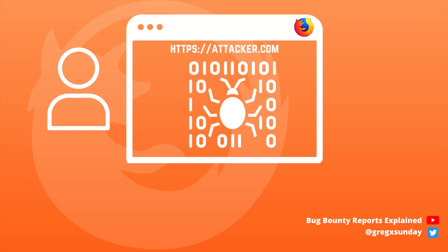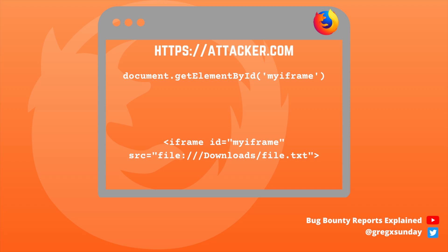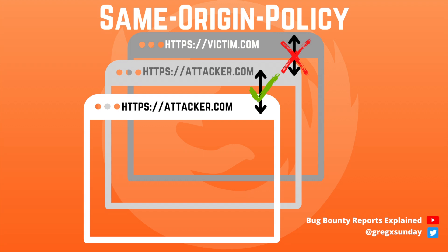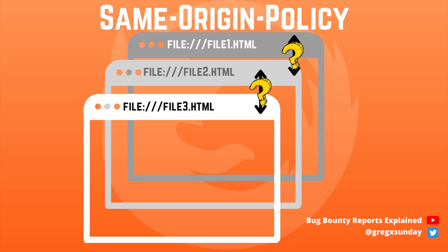Our goal will be stealing those files, and the most likely attack scenario is that the victim visits our malicious website containing the exploit. It's easily possible to create a website that opens a local file and alerts its content, but the parent website has no access to that information. It's because same origin policy would block such attempts — it's a browser security mechanism that protects websites from different domains from stealing each other's data. In general, websites need to share the same domain to be able to access each other's data. But the question is: how do sites with the file protocol obey same origin policy, since they have no domains?